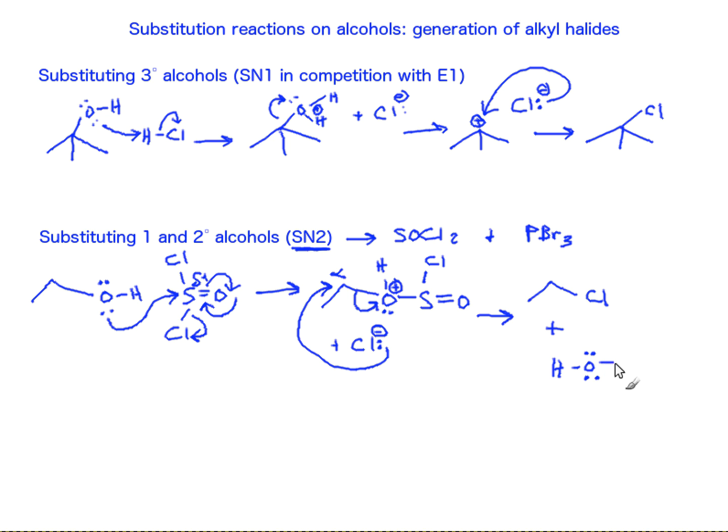The substitution has occurred, and we have ejected our leaving group, which is a stable leaving group. This substitution doesn't directly happen on the alcohol. We first have to modify that alcohol group into a good leaving group in order for this SN2-based mechanism to be effective.